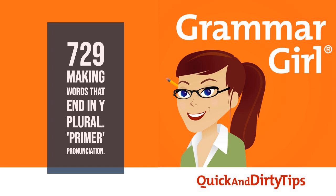One other tip: for proper nouns that end in Y, you simply add an S. You never convert the Y to I-E-S, no matter what letter comes before the Y. For example, if you had two Cadbury cream eggs, you'd have two Cadburys, spelled with B-U-R-Y-S at the end, even though there's a consonant before the Y. If you were writing about the Murray family, you'd spell it Murrays, M-U-R-R-A-Y-S. There are exceptions to the rules, so if you're ever in doubt about a specific word, check a dictionary or a usage guide to be sure.